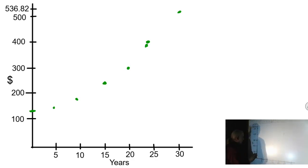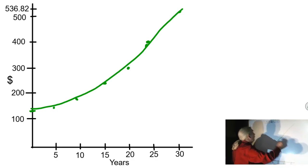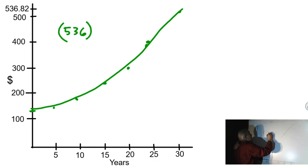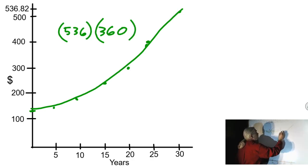So if we connect these dots, that is the amount of money that you pay for your house right here. The whole square would be $536 times 360. That's how many months 30 years in,